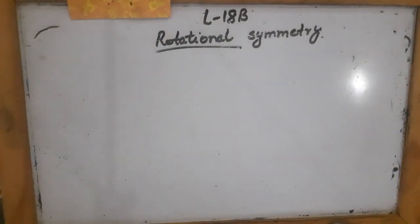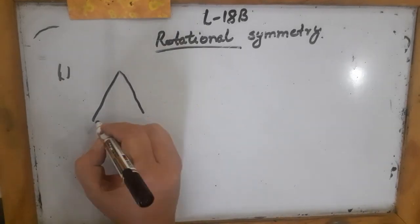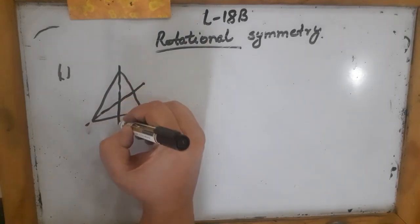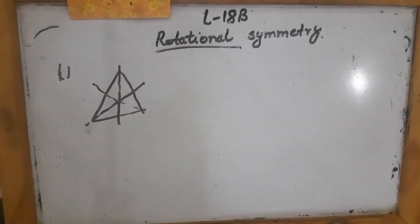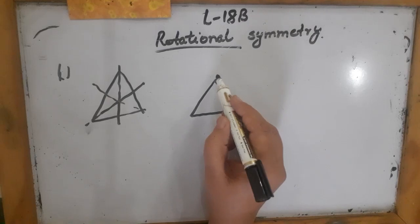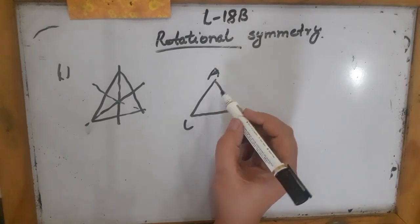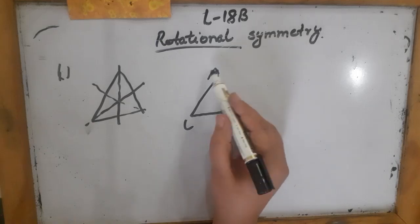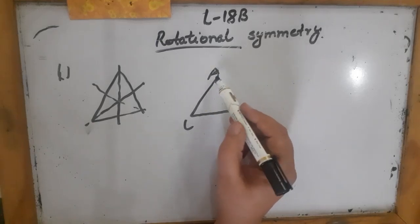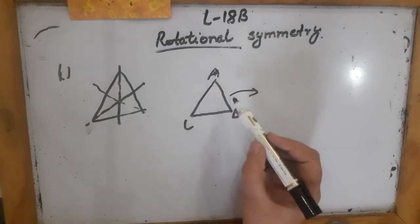Coming to exercise 18B, the first question says: how many lines of symmetry does an equilateral triangle have? In the last lecture on exercise 18A, we did the lines of symmetry of an equilateral triangle — it has three lines of symmetry. Now, what is the order of rotational symmetry of an equilateral triangle? Because all sides are equal, let me name this as A, B, C. When I start rotating it, they are asking the order — meaning how many times it looks the same as it completes one full rotation.